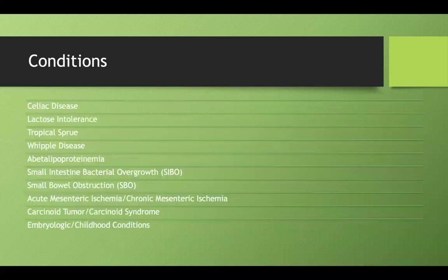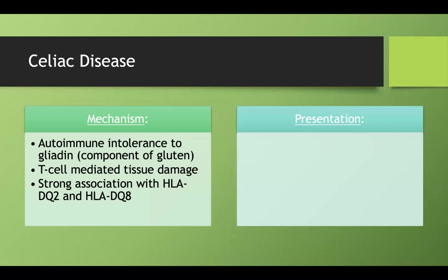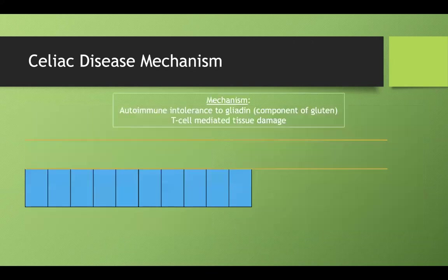Moving to clinical conditions, starting with probably the most important: celiac disease. Celiac disease is an autoimmune intolerance of gliadin, a component of gluten, causing T cell-mediated tissue damage. There is an association with HLA-DQ2 and DQ8 — a genetic predisposition. A mnemonic: 'hate to have DQ' (like Dairy Queen) — the 8 for 'hate' and 2 for DQ, reminding you of DQ2 and DQ8.